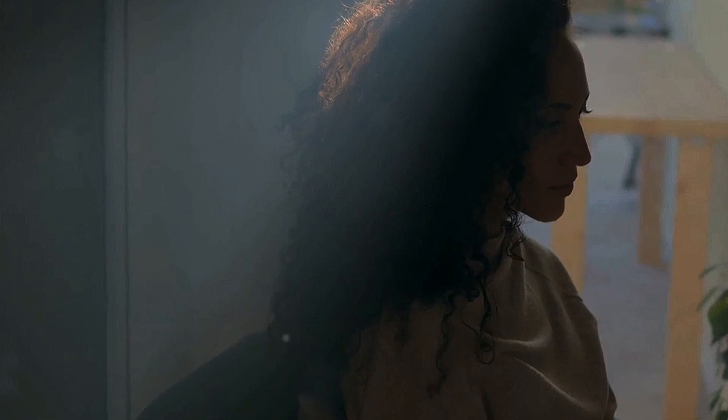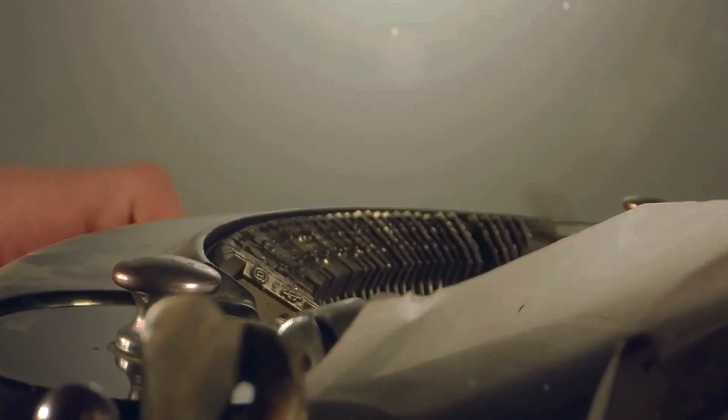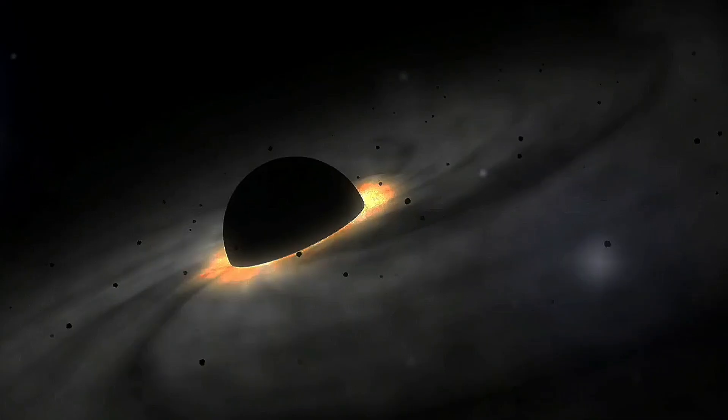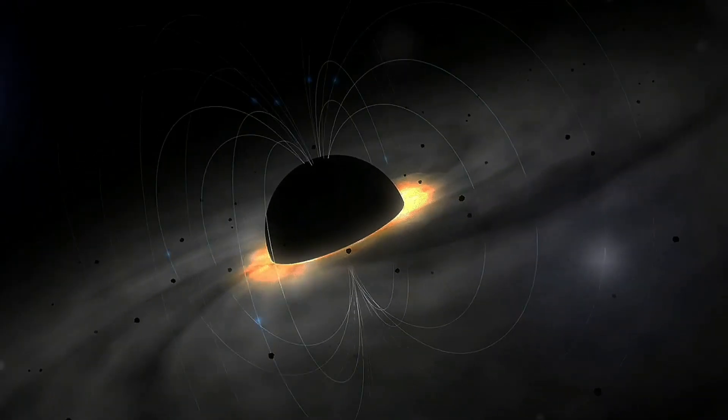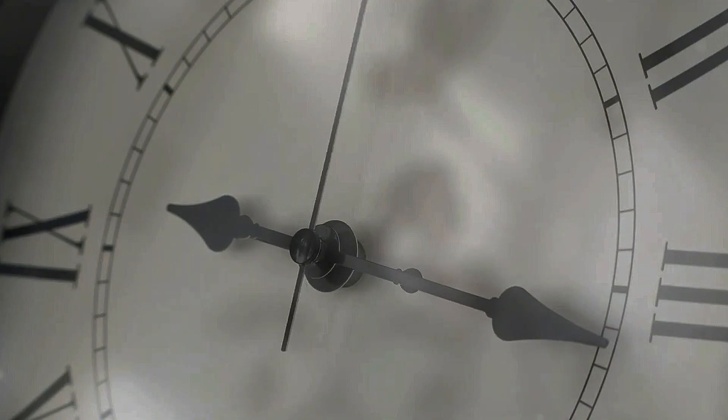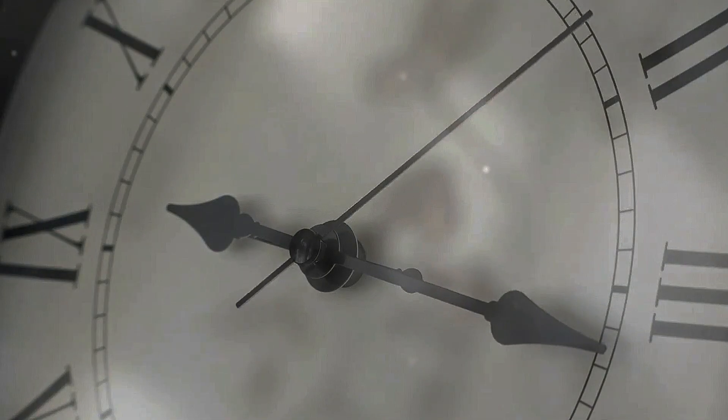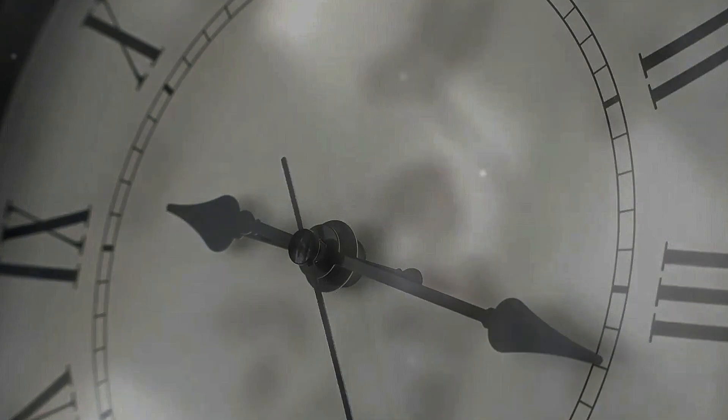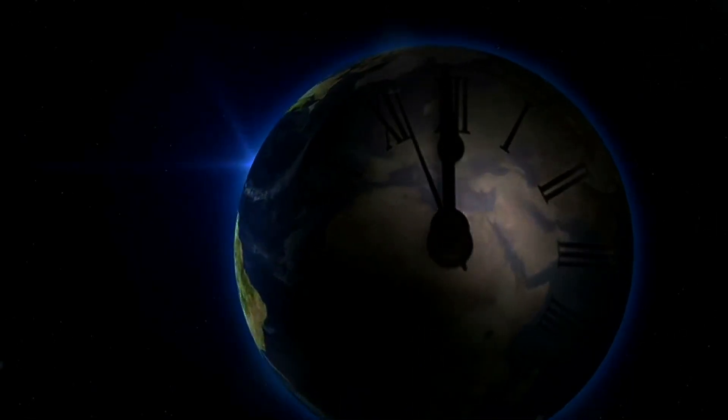Let's delve into the fascinating consequences of Einstein's groundbreaking theory: gravitational time dilation and frequency shift. Einstein's theory of general relativity predicts that gravity affects the passage of time. Imagine time flowing slower near a massive object like a planet or a star. This phenomenon known as gravitational time dilation means that clocks closer to a massive body tick more slowly compared to those farther away.